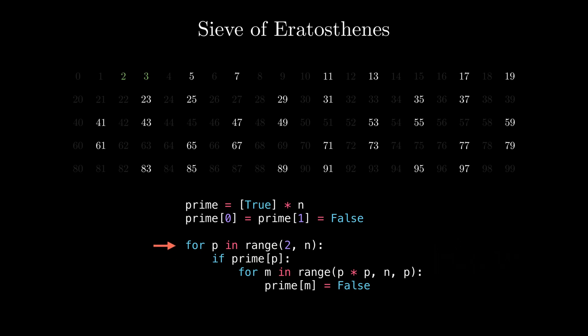After that, p is 4, so we check if prime[4] is true. As the value is set to false, we don't do anything. Moving forward, p is set to 5. We check if prime[5] is true and because its value is true, we iterate over all the multiples of 5 starting from 25 and mark them with false.